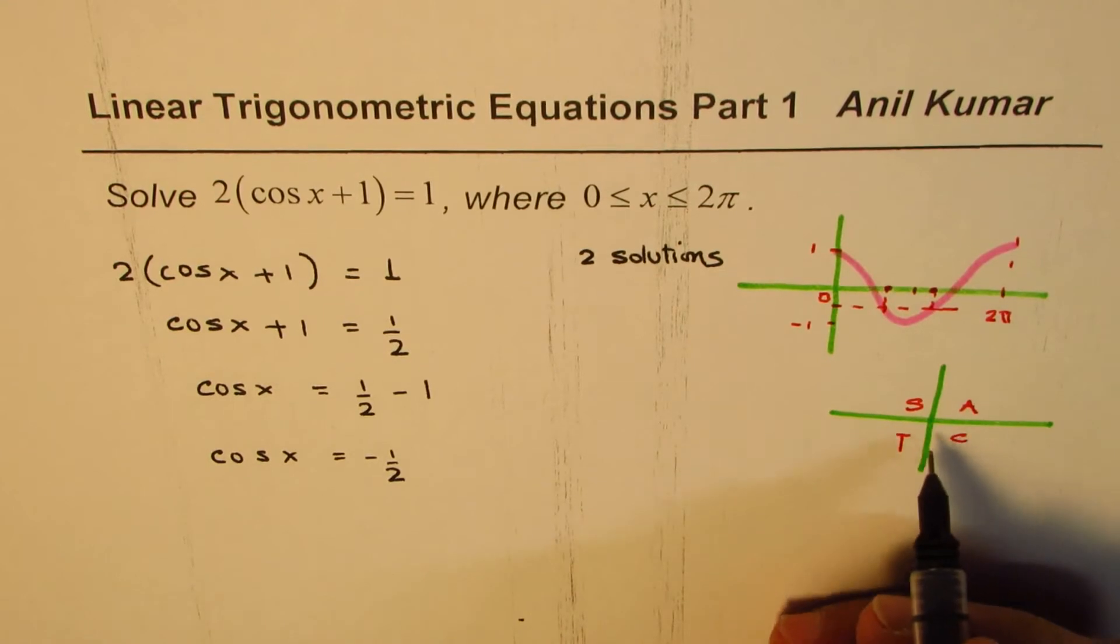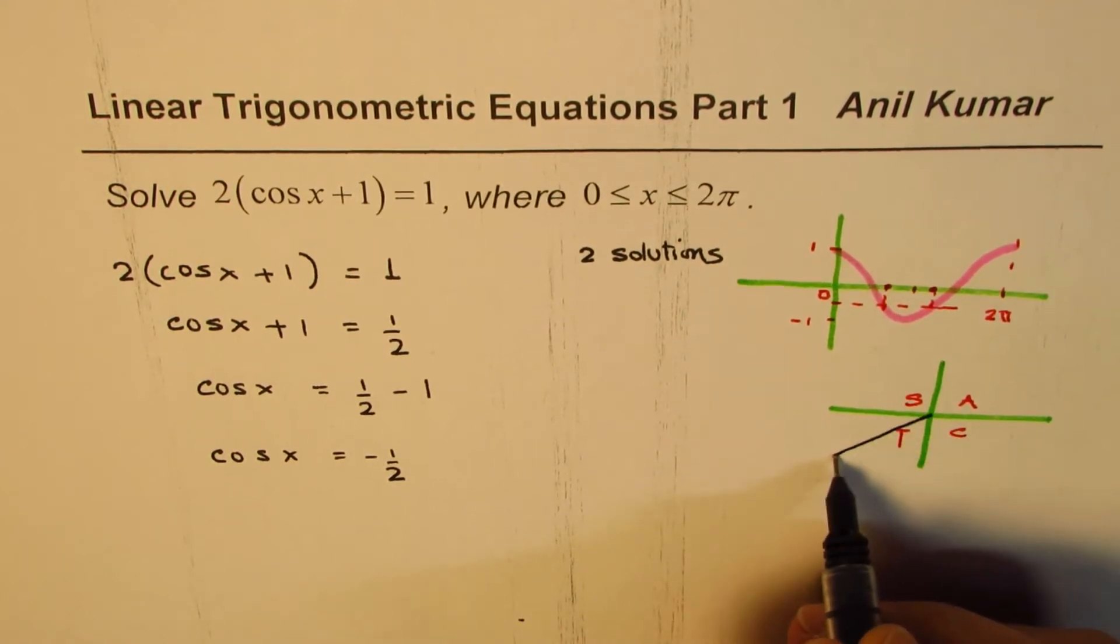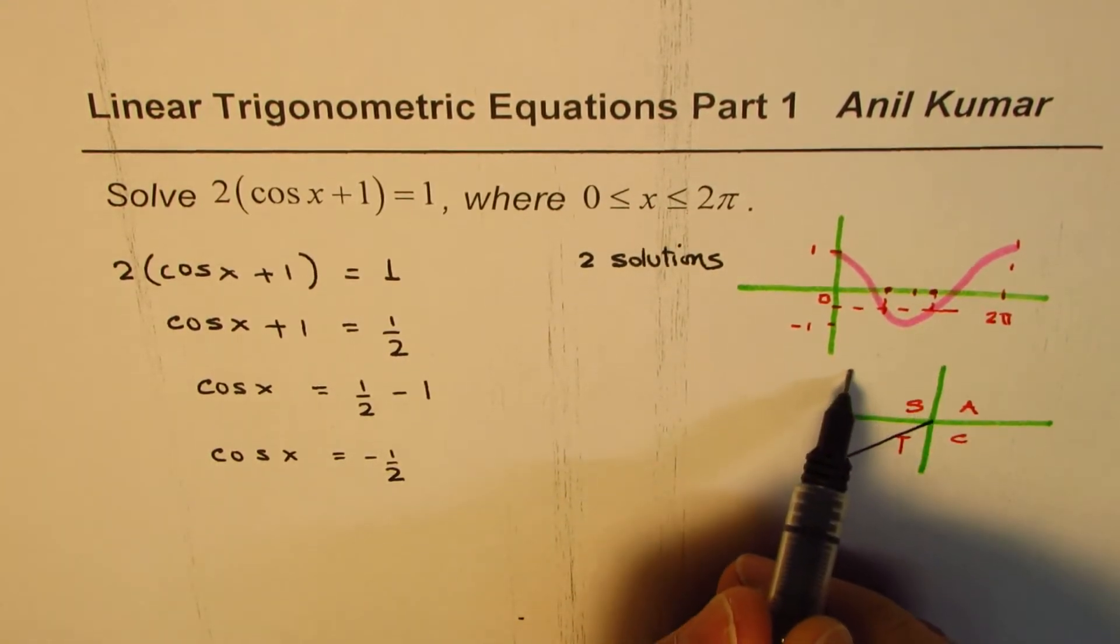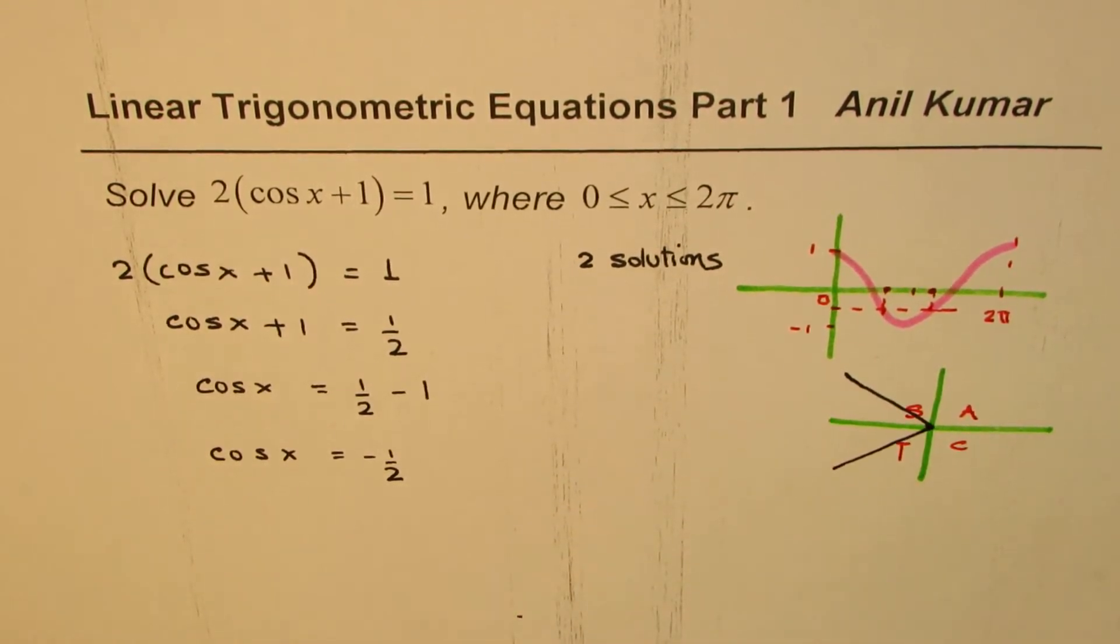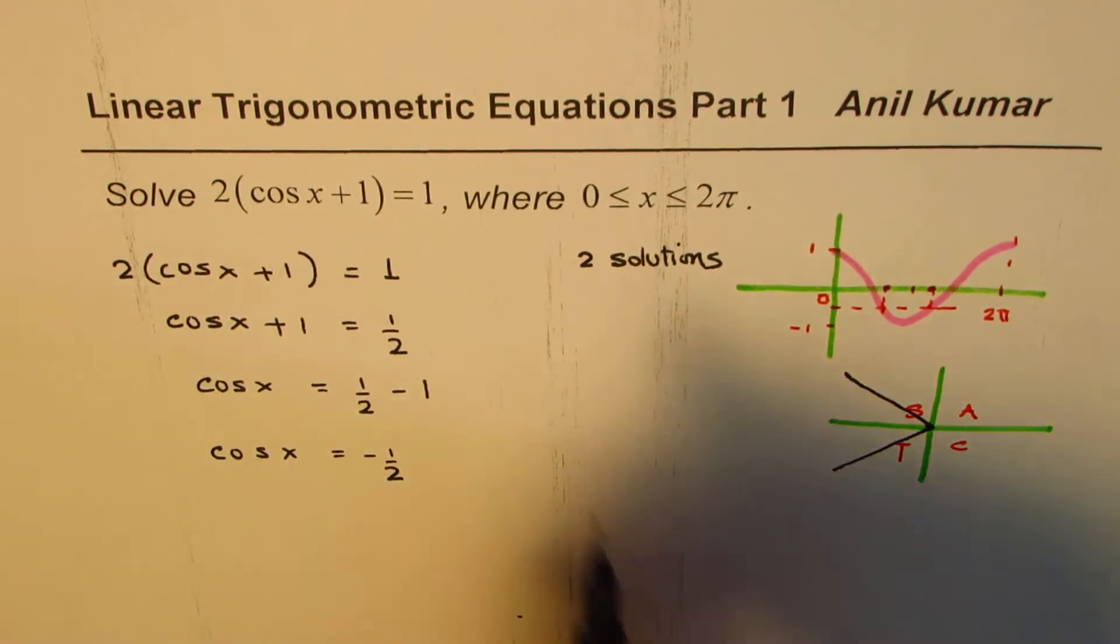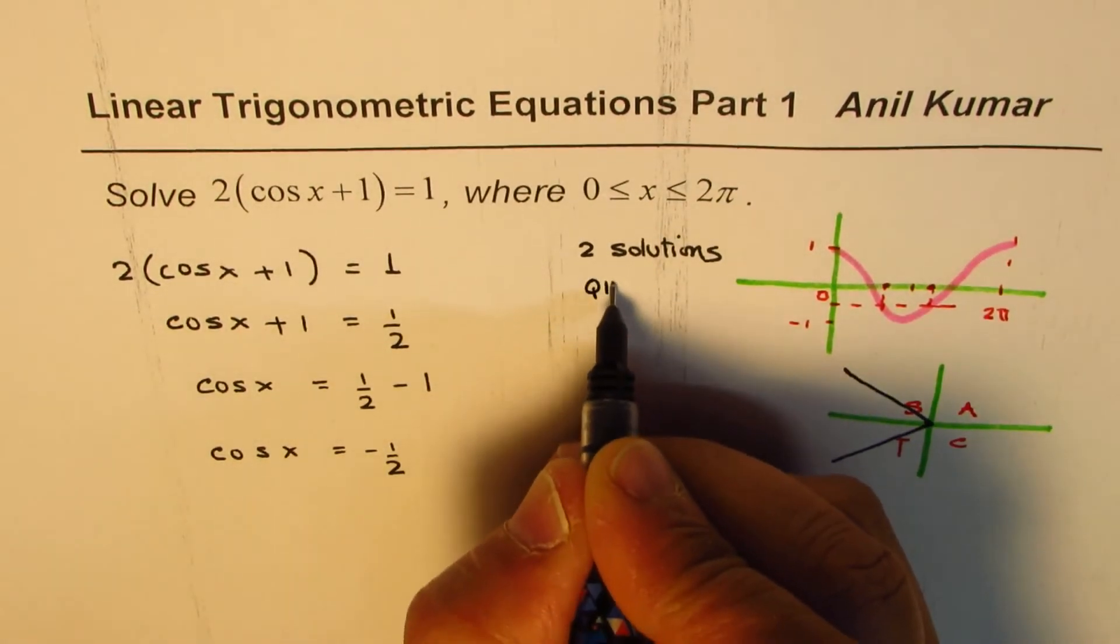Negative means cosine will be negative in quadrant three or in quadrant two. In these two quadrants, the cosine function is going to be negative. So we are looking for two solutions and they lie in quadrant two and in quadrant three respectively.